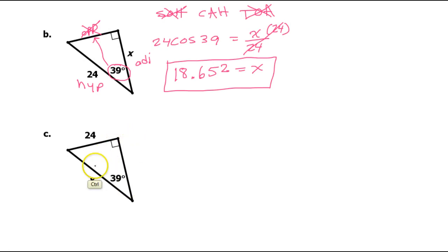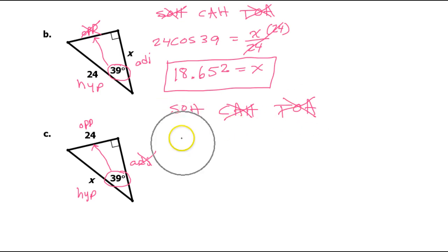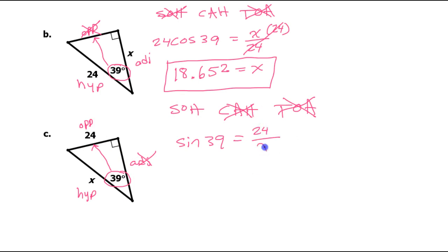One more time. Across from the 90 degree angle will always be the hypotenuse. Here's the angle that we've got. Across from the angle is the opposite leg. Right next to the angle is the adjacent leg. Think about SOHCAHTOA — which one of these sides is doing nothing? The adjacent leg is doing nothing. So I'm going to throw out cosine and tangent because of the A. That means we will use the sine function. So we will say sine of 39 is equal to opposite over hypotenuse, so that's going to be 24 over x. When the x is in the denominator, that's when you swap — so you have x is equal to 24 over sine 39.